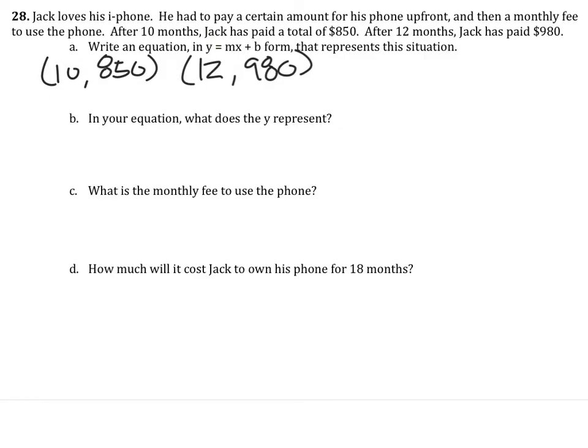So to write the equation for this, the first thing we're going to need is the slope. So the slope on this, $850 to $980, that's $130 over, looks like it's going to be two months. So that would be $65 per month is the slope.